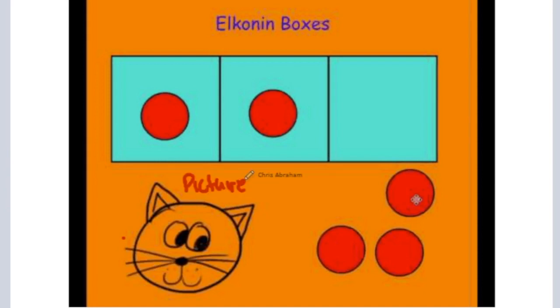And in this picture, the student would look at the picture and say cat. And with that cue, so there's no print involved, they would sound out the individual phonemes they hear in cat.